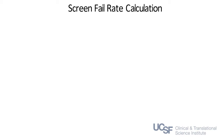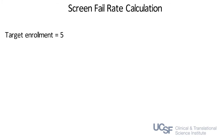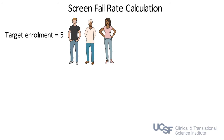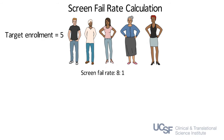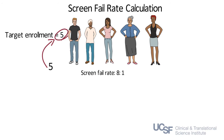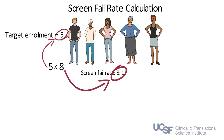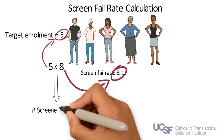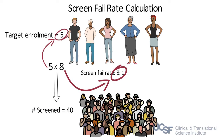Now let's practice doing a screen failure rate calculation. Say your target enrollment is 5 and historically your screen fail rate is 8 to 1, meaning you had to screen 8 candidates in order to enroll 1 participant. Then your recruitment plan should attract at least 40 potential study candidates.